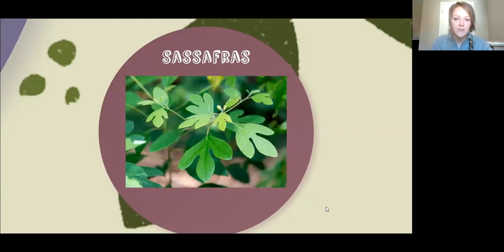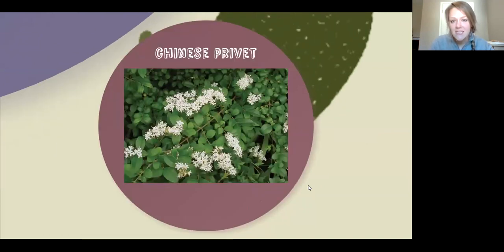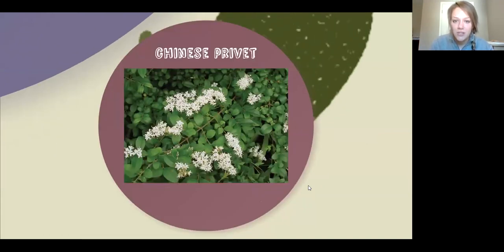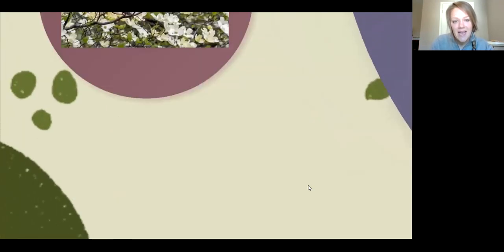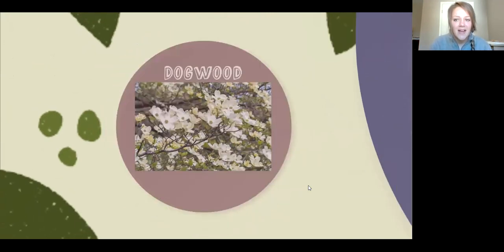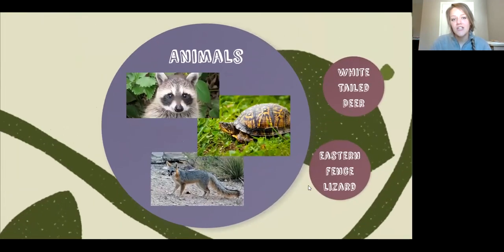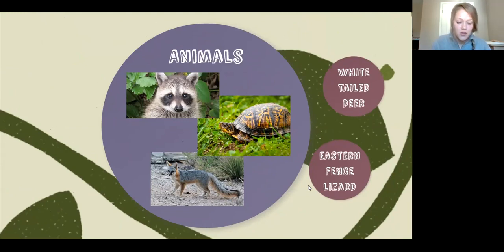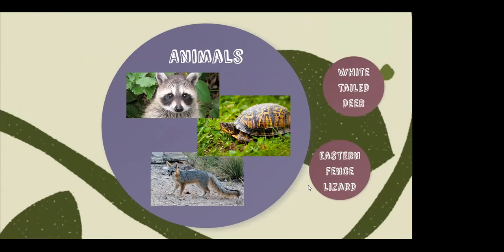Aaron is going to flip through pictures of the plants we talked about for a close-up view — sassafras, Chinese privet with a nice picture showing the blooms, poison ivy, and the flowering dogwood. Now we're going to move on to animals. We're going to start with a video — we actually set up a bait station and a track pad to see what animals are trafficking the area when we're not around.